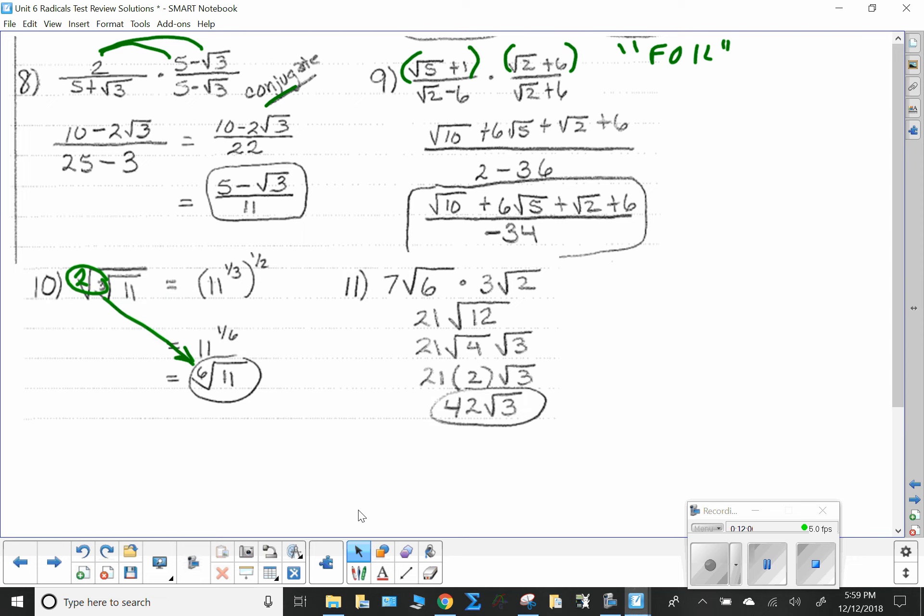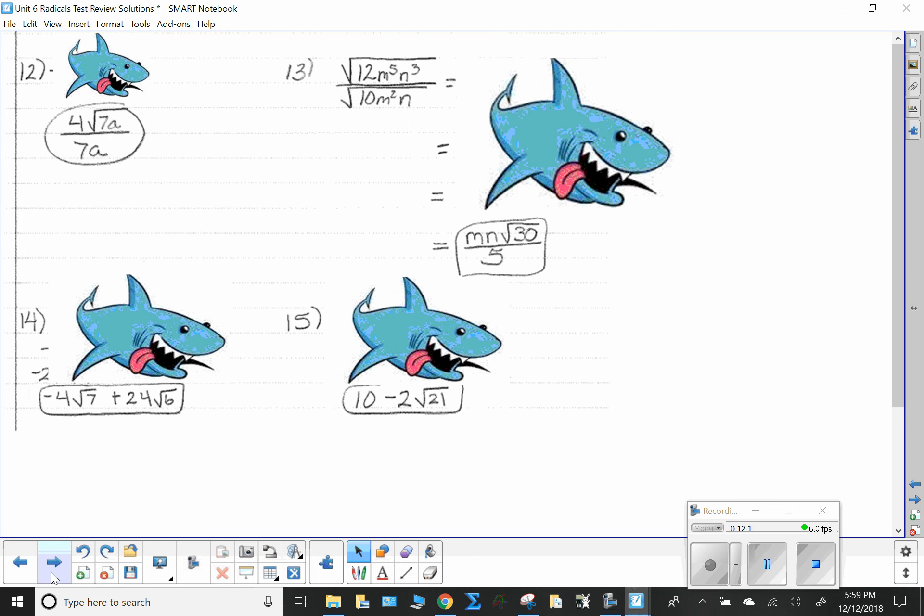Number 11. I have 7 root 6 times 3 root 2. Combine the 6 and the 2 underneath, the 7 and the 3 on the outside. Then simplify the radical. Number 12. I need to rationalize my denominator. Pretty straightforward there.